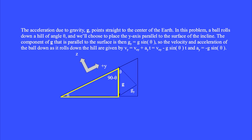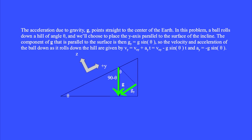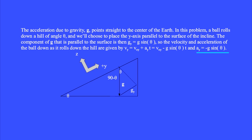In this triangle, all three angles add up to 180 degrees. One angle is theta, one is a right angle of 90 degrees, so the third must be 90 minus theta. Here is another right angle, and this angle plus this angle add up to 90, so we conclude the remaining angle is also theta — the same as the angle of the incline. The component of vector g parallel to the surface is g sub y equals g sin theta, because this side is opposite the angle theta. So the velocity and acceleration of the pinball rolling down the hill are given by v sub y equals v sub y zero plus a sub y times t equals v sub y zero minus g sin theta times t. The y component of acceleration is g sin theta with a minus sign because it points in the minus y direction.